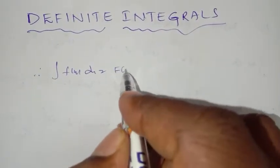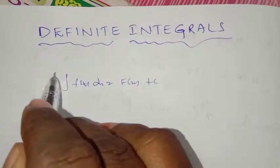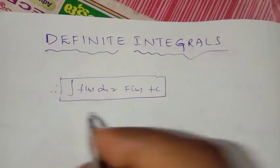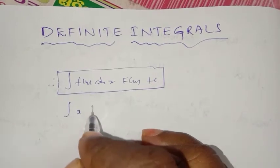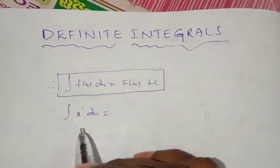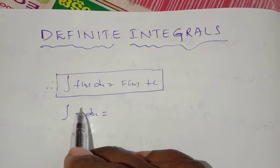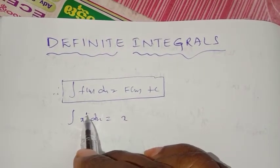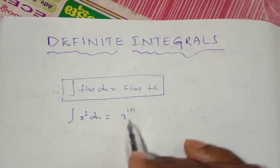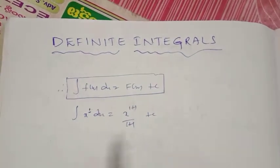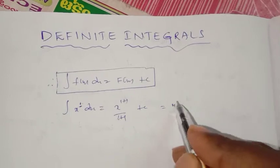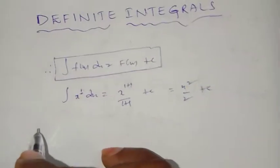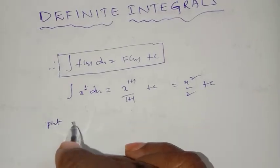The indefinite integral equals f(x) plus c. For example, ∫x dx equals x to the power of n+1 divided by n+1, which gives us x squared by 2 plus c.